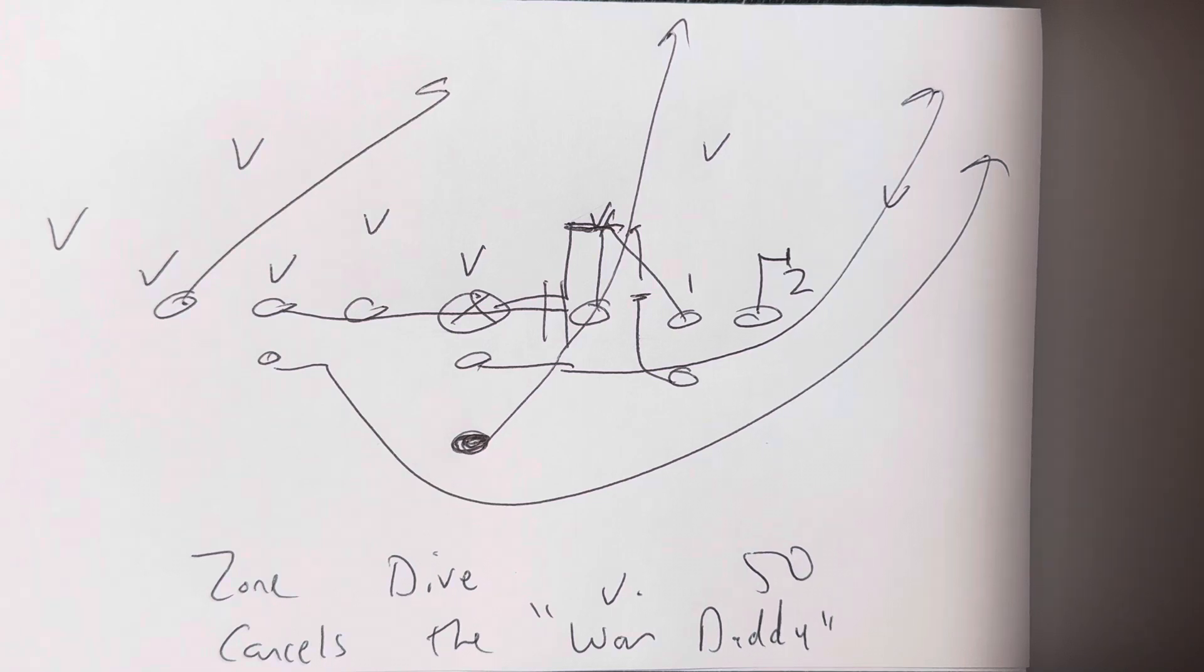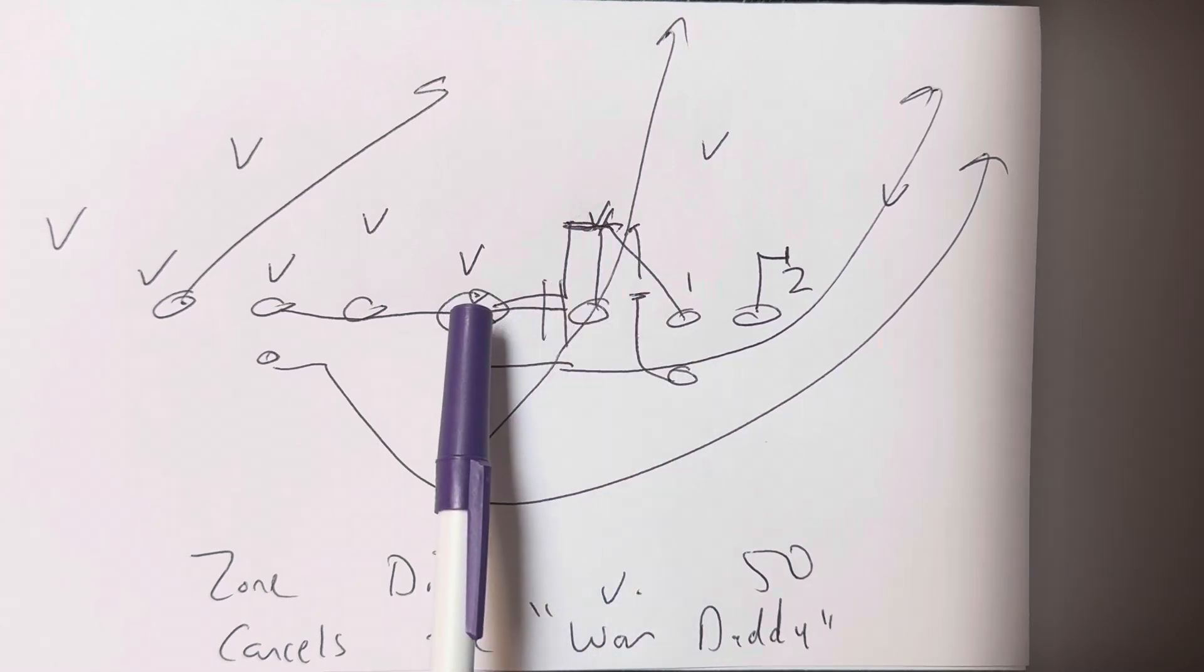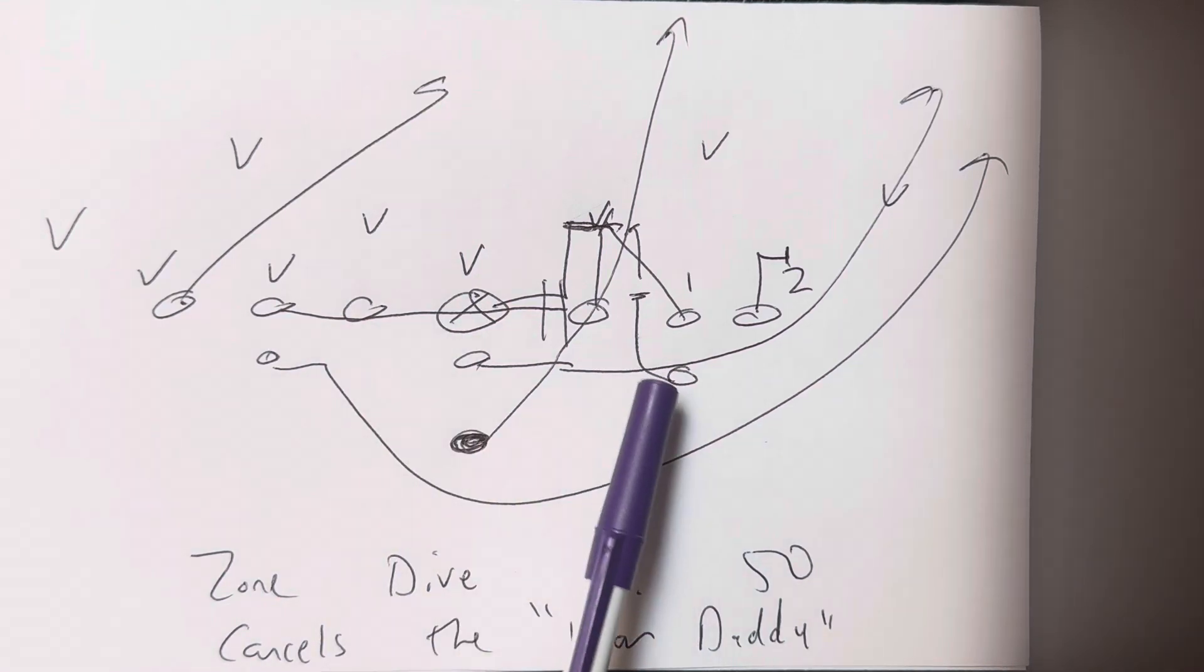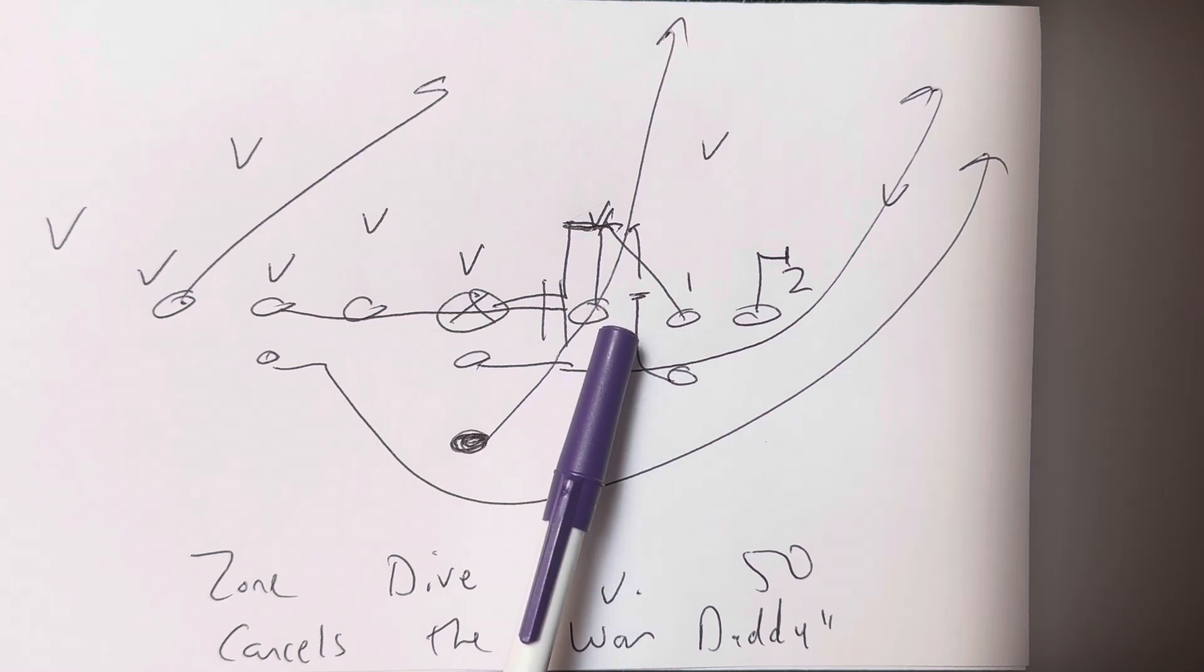So, what the modern-day zone dive did was, now you're in a situation where you're running a wedge, where the guard posts, tackle wedges with the guard, center snaps the ball, and then wedges with the guard, and then blocks whoever is engaged with the guard. So, that happened, and then the A-back wedges with the tackle, two-hand slams whoever shows. If nobody shows, he goes second level.